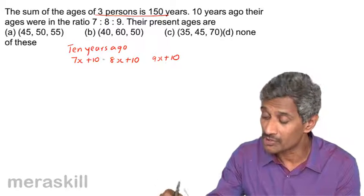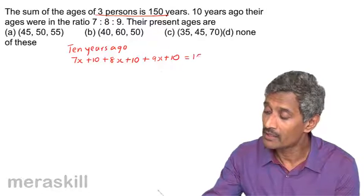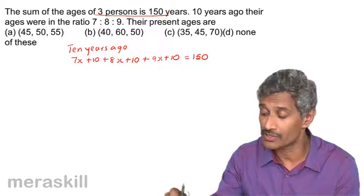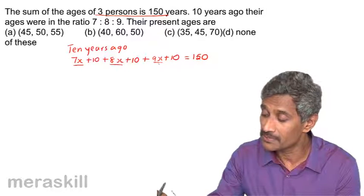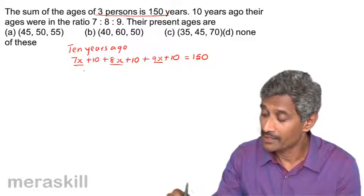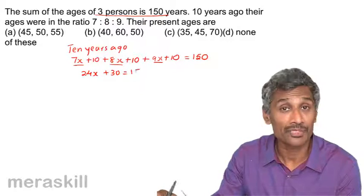And as per condition, this sum is 150 years. So we need to add this: 7x plus 8x, 15x plus 9x. And you have 24x plus 30 is 150.